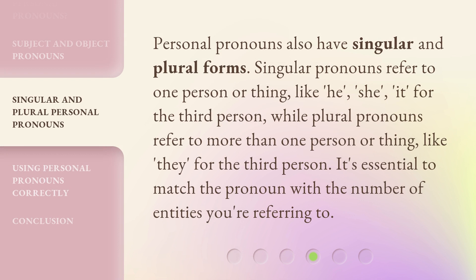Personal pronouns also have singular and plural forms. Singular pronouns refer to one person or thing, like he, she, it for the third person. It's essential to match the pronoun with the number of entities you're referring to.